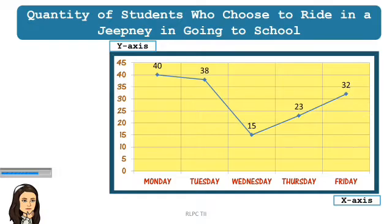Study the line graph. It's about the total number of students who choose to ride in a jeepney in going to school, and be ready to answer the questions later.